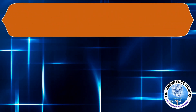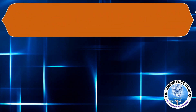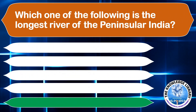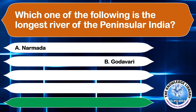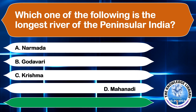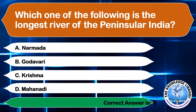Which one of the following is the longest river of Peninsular India? A. Narmada, B. Godavari, C. Krishna, or D. Mahanadi. The correct answer is option B, Godavari.